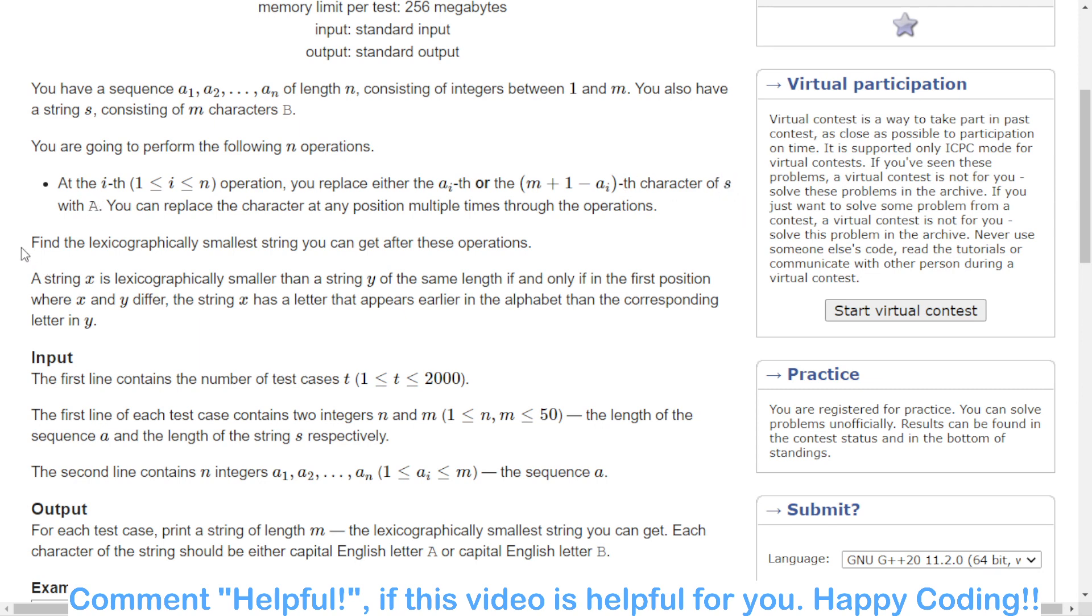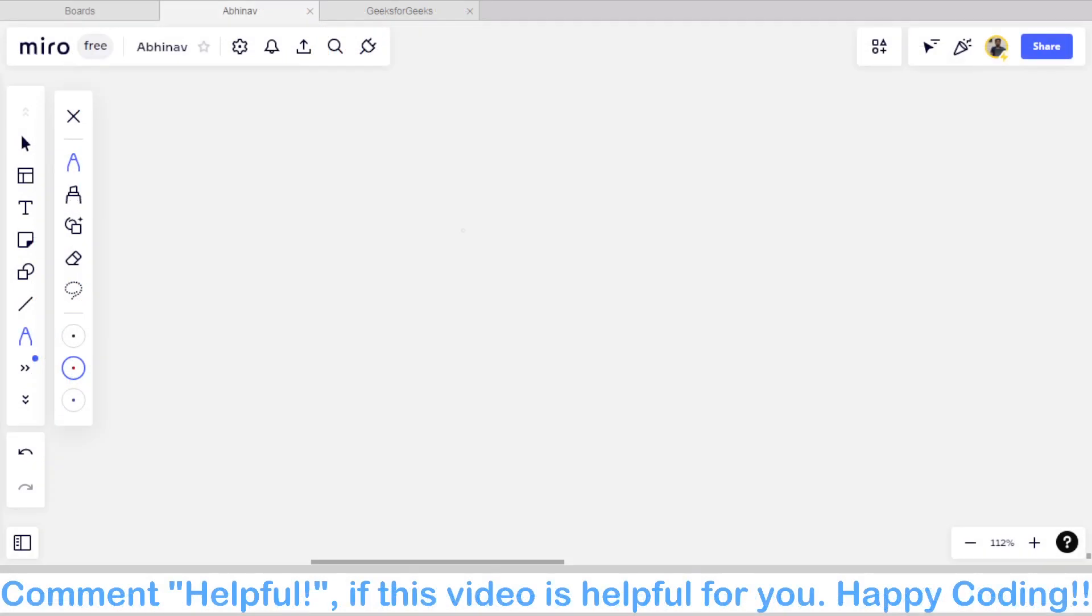Let's understand with an example. The value of m is 5, and the array is 1, 4, 3, 2, 5. Initially, s will be BBBBB.